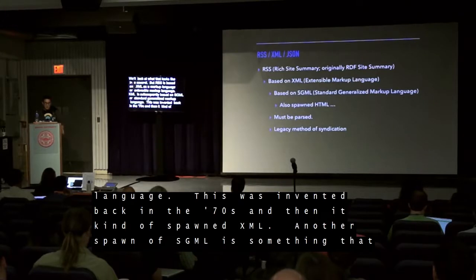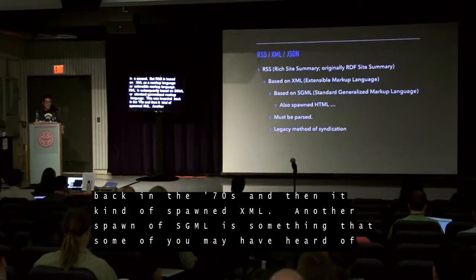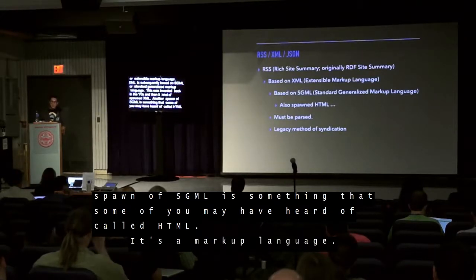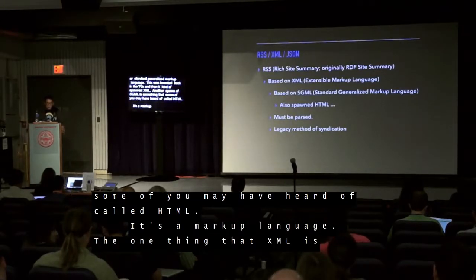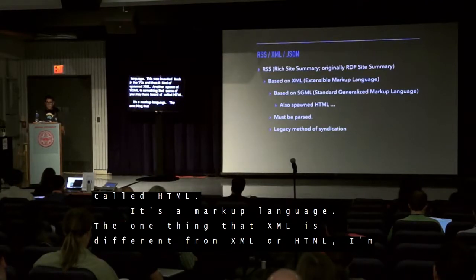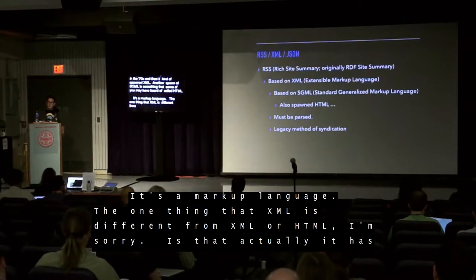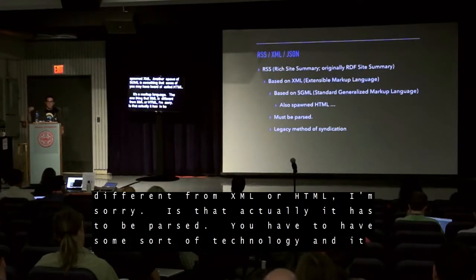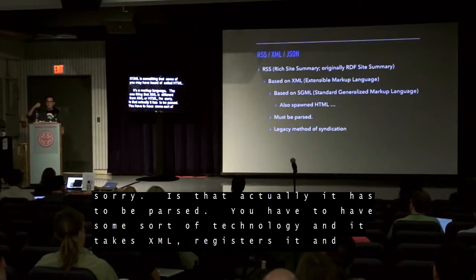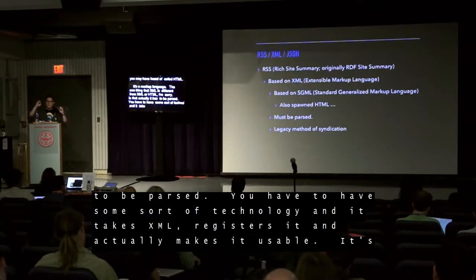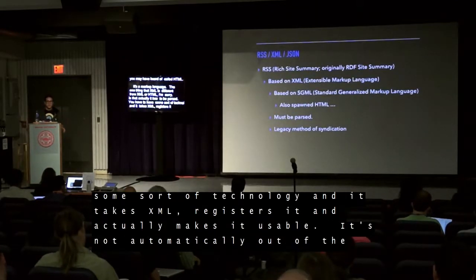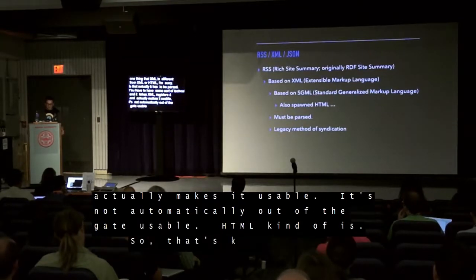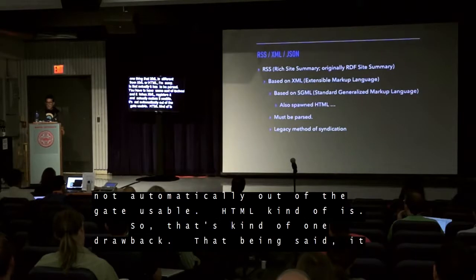SGML spawned XML, and another spawn of SGML is something called HTML — it's a markup language. The one thing that XML is different from HTML is that it actually has to be parsed. You have to have some sort of technology that takes XML, registers it, and makes it usable. It's not automatically usable out of the gate. HTML kind of is.